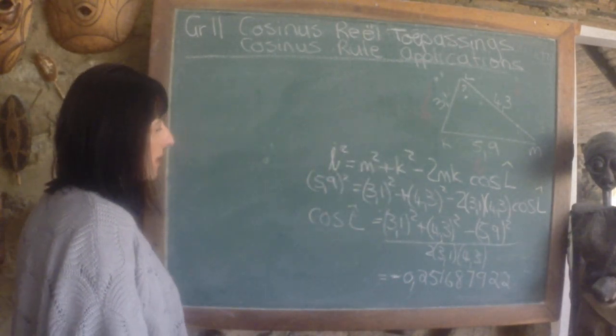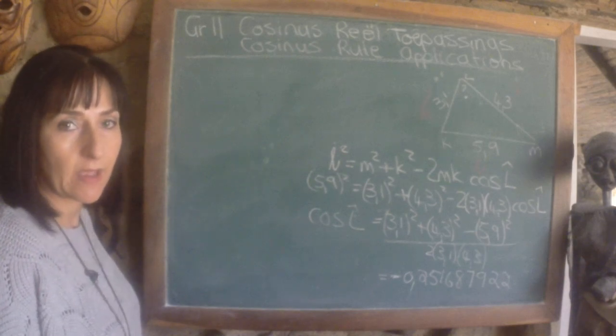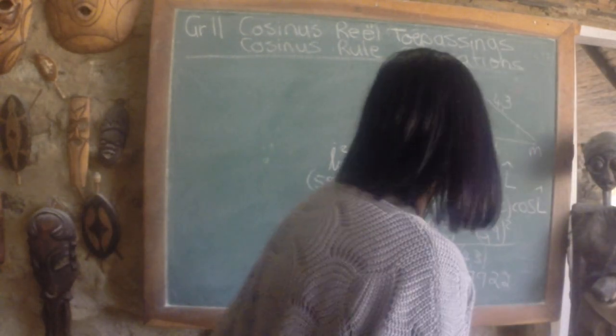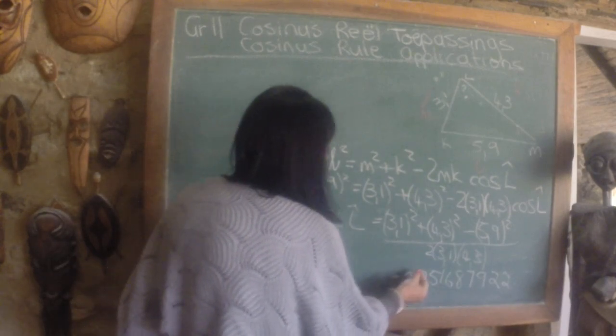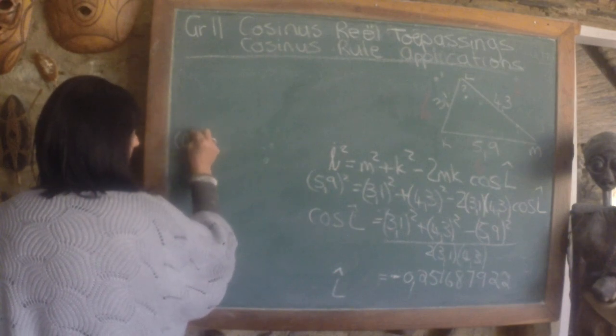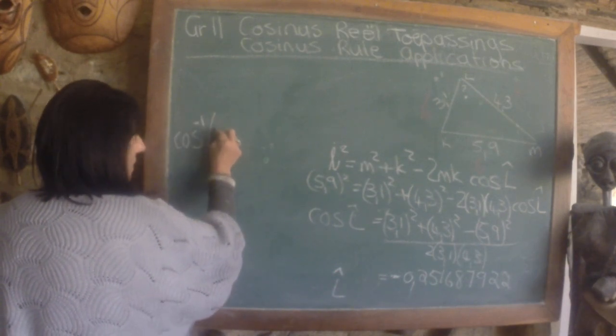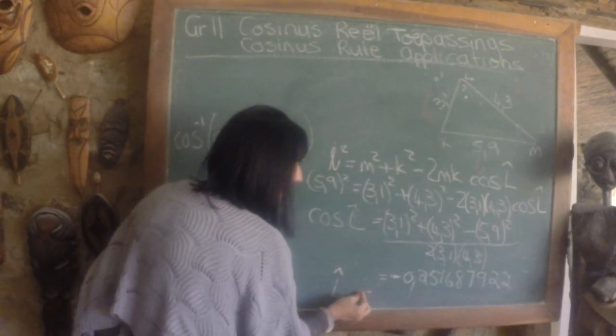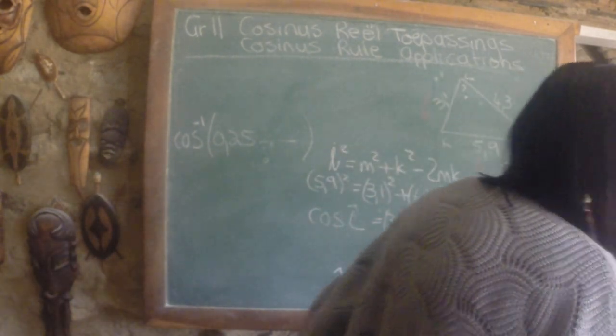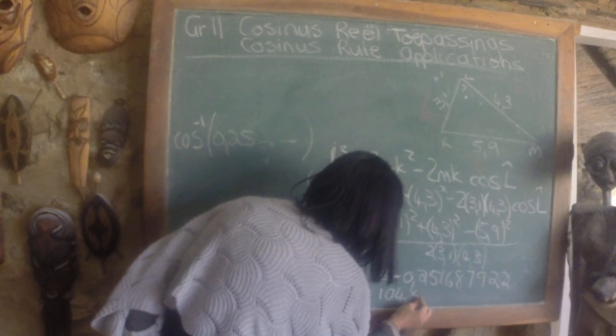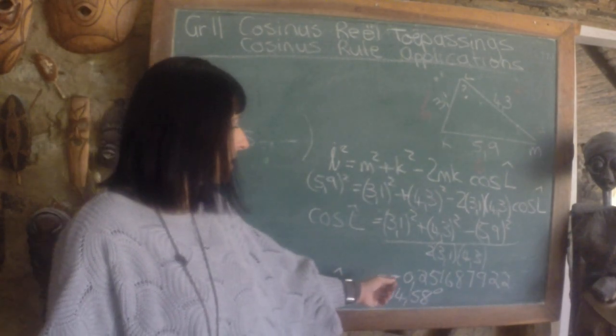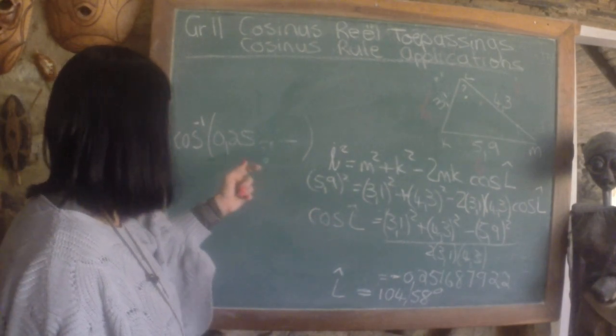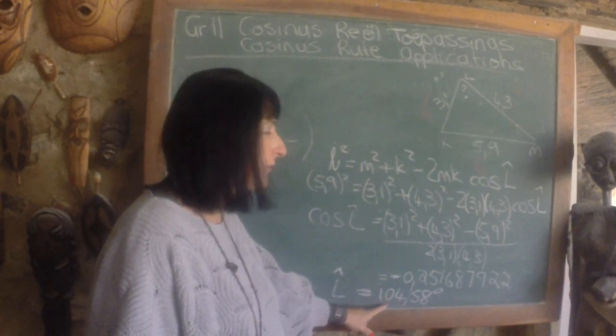When you get a negative answer in cases like that, that means this is an obtuse angle. That means the answer that I get I have to subtract from 180 degrees. So if you do your second function you are going to put in the cos second function of 0.25 or the whole thing and that angle that you are going to get you are going to subtract from 180 degrees and that is going to give you 104.48 degrees. Remember, if you get a negative answer it means that this is an obtuse angle and then you have to subtract from 180 degrees to get your answer.